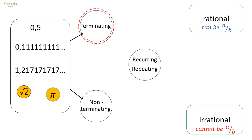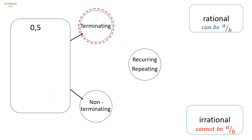A number is terminating if it can come to an end — it stops somewhere. For example, 0.5 ends with one digit after the decimal comma. Because it has only two digits and that's all, we say 0.5 is terminating.